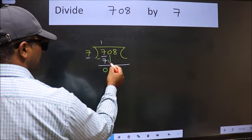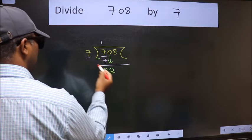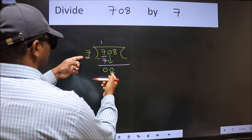After this bring down the beside number. So 0 down. Now here we have 0 and here 7. 0 is smaller than 7.